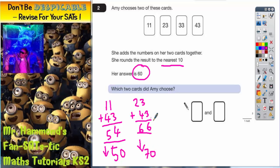So you still haven't got it. I can see that 33 and 43 is going to be too big - that's 3 and 4, which is already 70, so it's going to be over 70, and that's not going to round to 60. What else haven't I tried? I haven't tried 23 and 33.